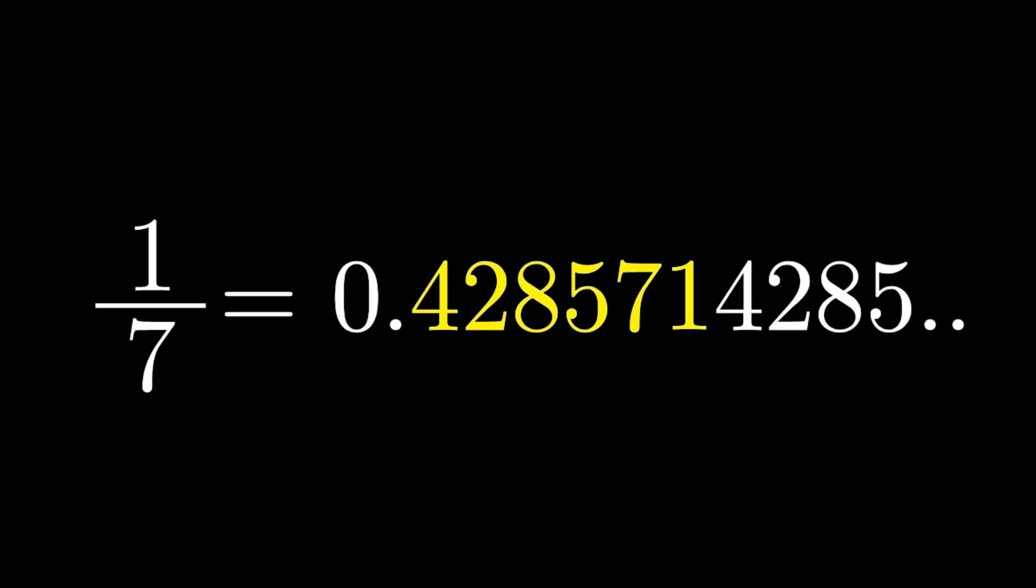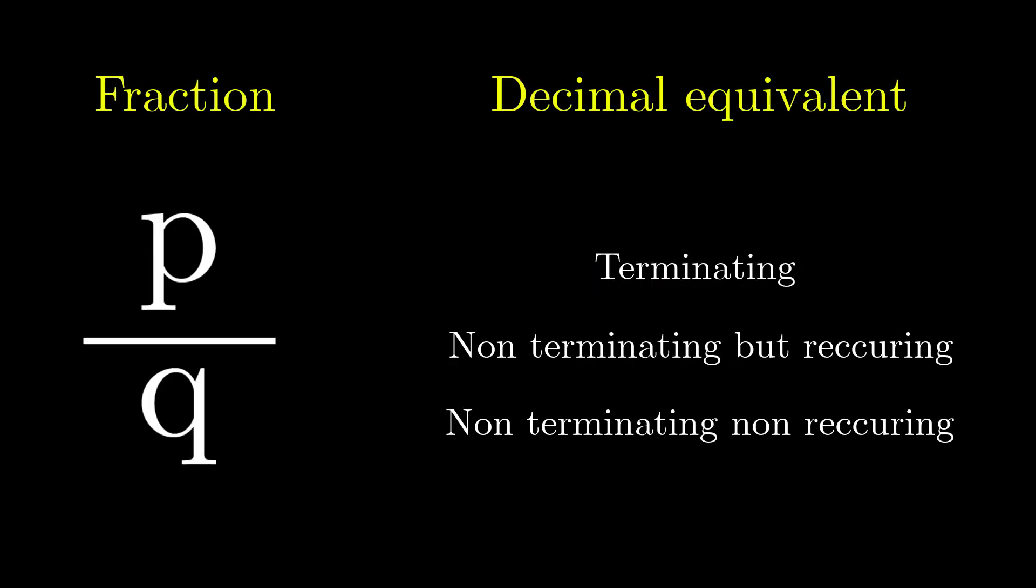This is the case with 1 over 3, where 3 is repeated indefinitely, or with 1 over 7, where a whole group of 6 digits is repeated. The reverse statement is also true. A decimal whose digits recur cyclically must be a fraction.